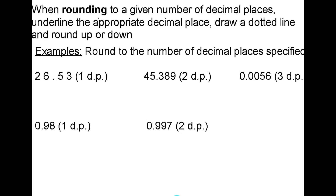When rounding to a given number of decimal places, our method is to underline the appropriate decimal place, draw a dotted line exactly to the right of that, and then to round up or round down as we have seen. In the examples, we're going to round to the number of decimal places which is specified.